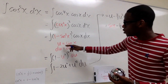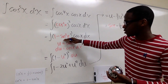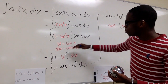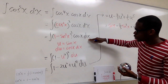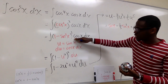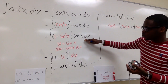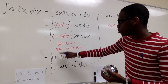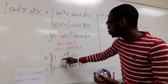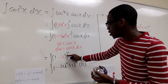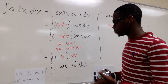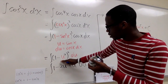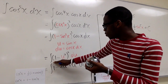Now we pick u to be sine x, so that when we take du we get cosine x dx, which is exactly what we want. Substituting in, we now have the integral of (1 minus u squared) squared du.